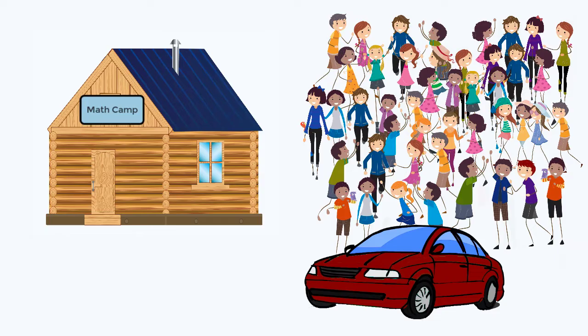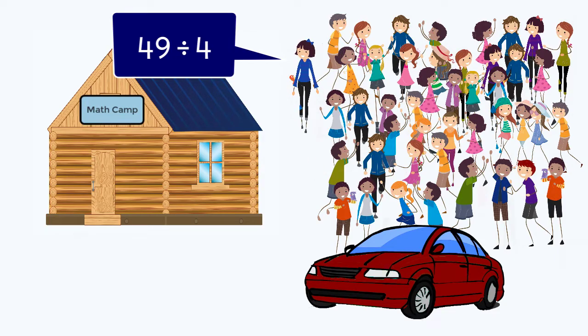In this case, division means how many groups of four can we make. So that would be 49 students divided by four.